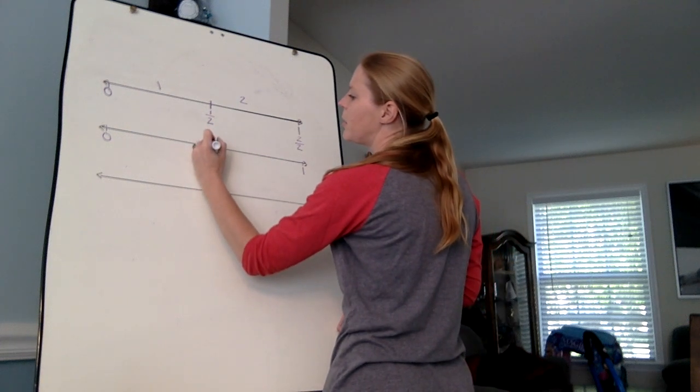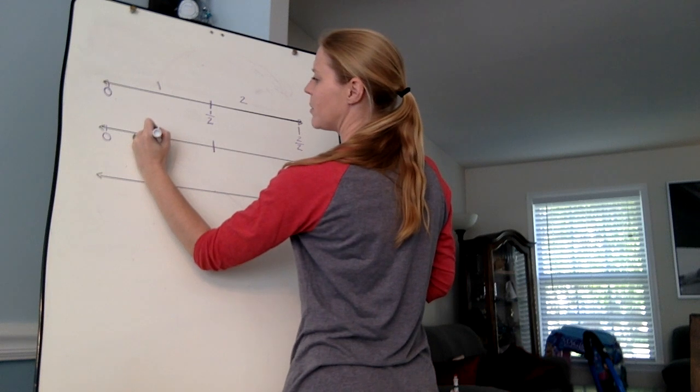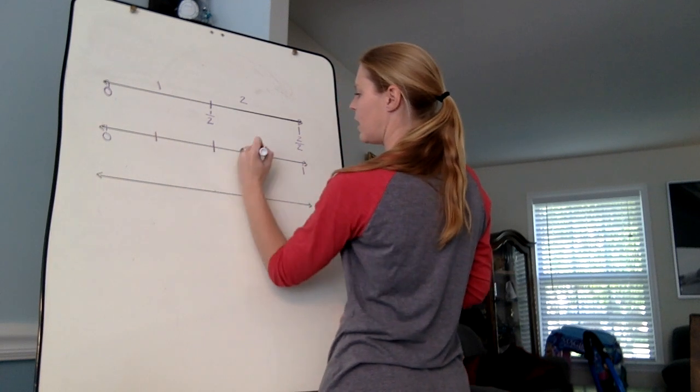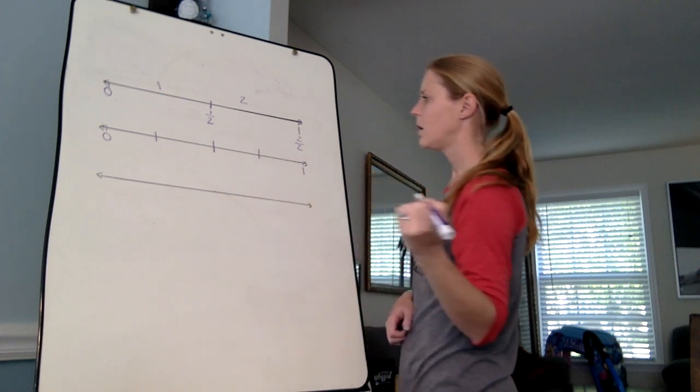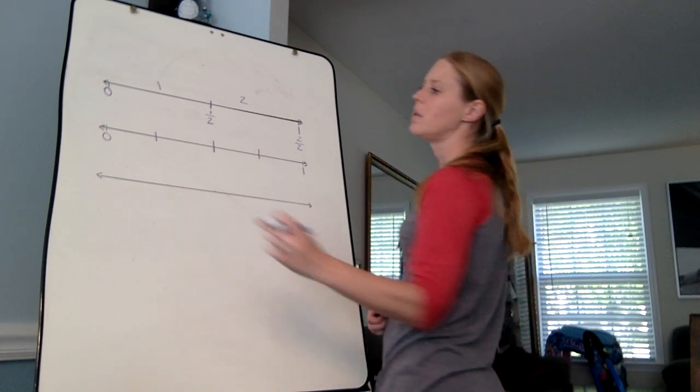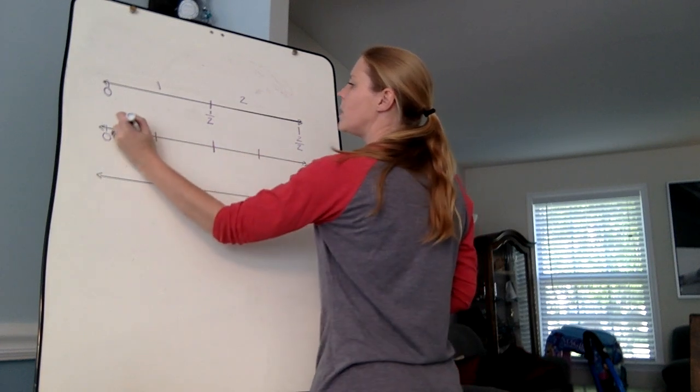I find the halfway point to get my two pieces, and then I kind of go halfway in between that and halfway in between that to get my four equal size pieces. So I have one, two, three, four pieces.